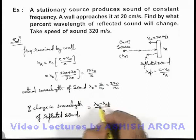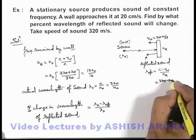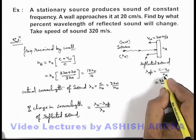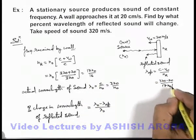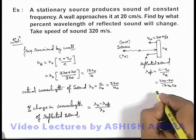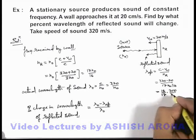And λ₀ we are having, λ apparent we can easily calculate as (320 - 20) divided by the received frequency which is 17n₀/16. On solving we'll get 16/17 into 300/n₀.